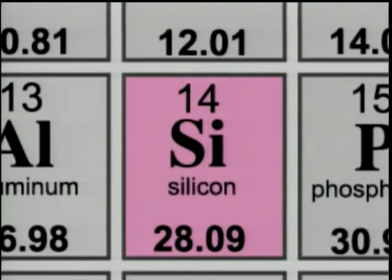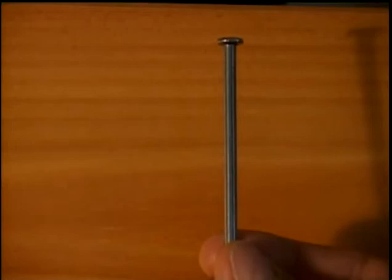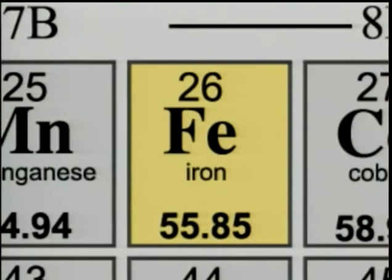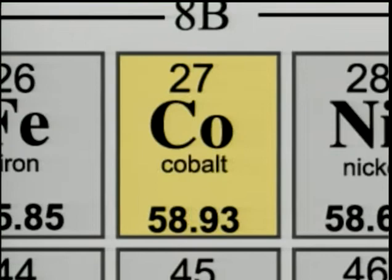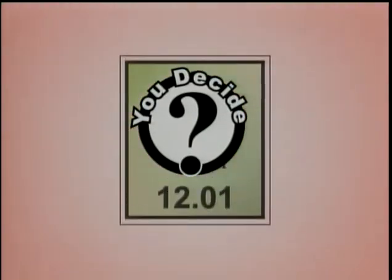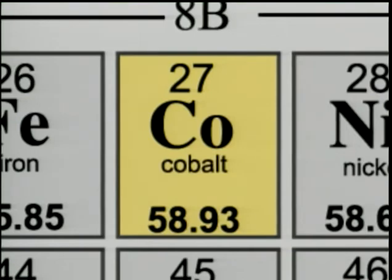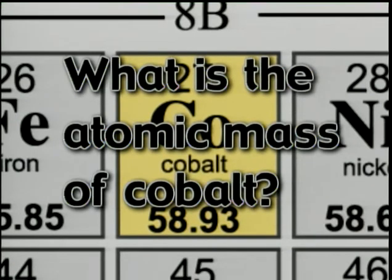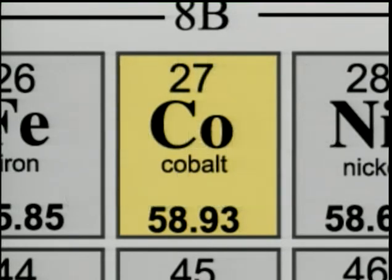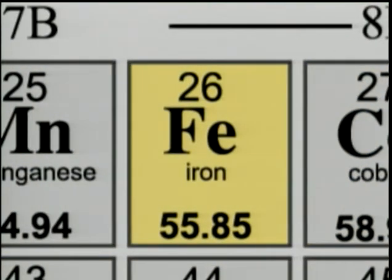While chemical symbols of elements often use the first couple of letters of an element's name, sometimes they do not. For example, iron, an element found in nails, has a chemical symbol of FE. Notice the number 26 found above the chemical symbol. This is the atomic number, or number of protons. To the right of iron on the table is the element cobalt. It has an atomic number of 27. What's the atomic mass of cobalt? You can see that cobalt has an atomic mass of 58.93 atomic mass units, whereas iron has a lighter mass of 55.85 atomic mass units.